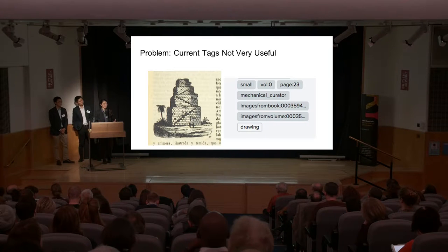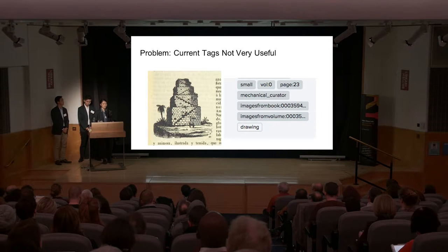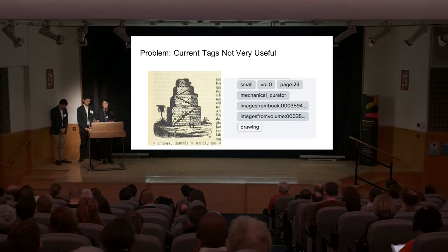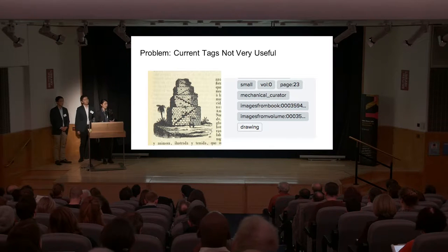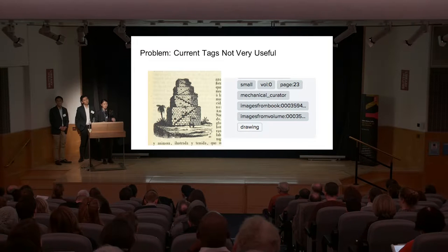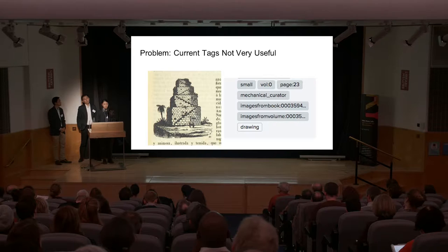However, the initial tags that were uploaded were not super useful. They gave information about the page number, the volume, the date that the volume was published. However, for someone who might be looking for a specific topic or subject, they didn't have tags that actually described the image or the category that the image belonged to.